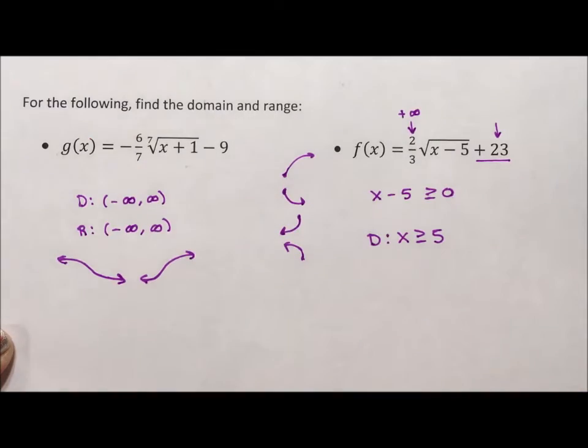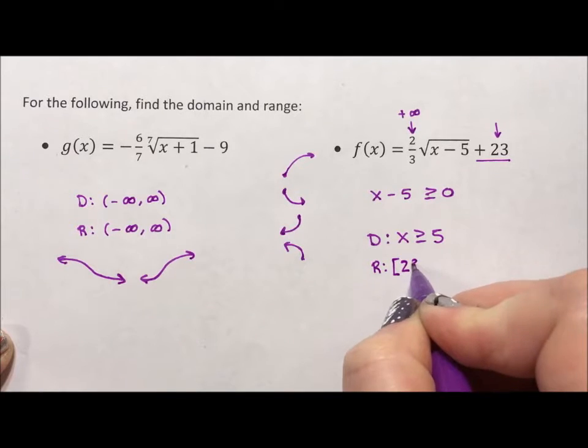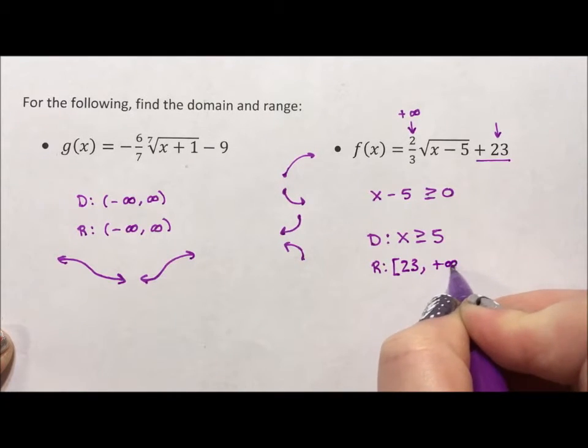The other one is the actual other endpoint of the range. So, our range will go from 23 to positive infinity.